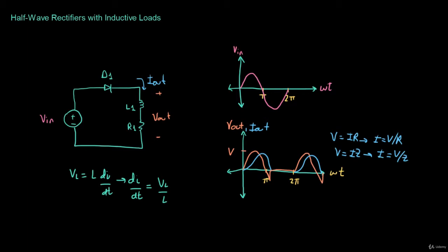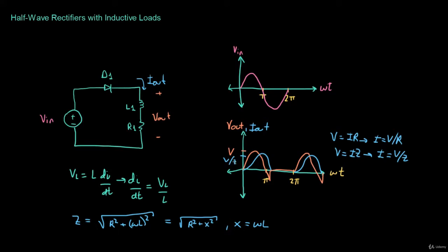We can calculate the impedance by the following equation. The impedance is equal to the square root of R squared plus X squared, where the reactance X is given by omega·L. So the peak of the output current is going to be V over Z, where Z is the impedance of the circuit.